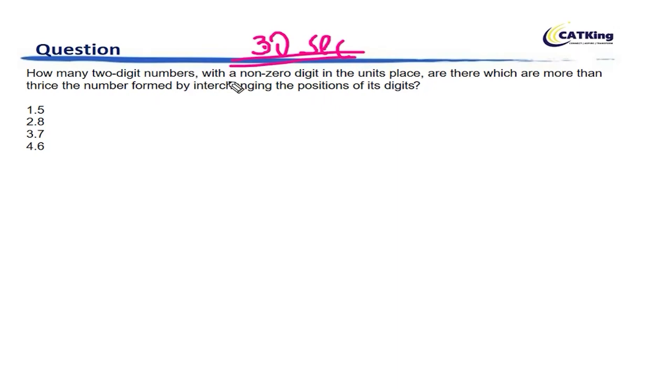In all the scenarios where it talks about—a lot of questions in CAT, as you know, in the previous year of CAT also we have seen—numbers formed by interchanging the digits, always you can begin by taking the number as 10x plus y and the interchanged position number as 10y plus x.